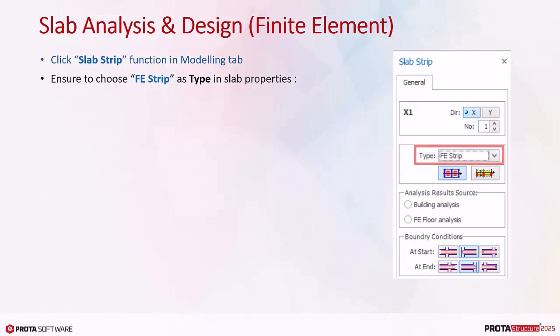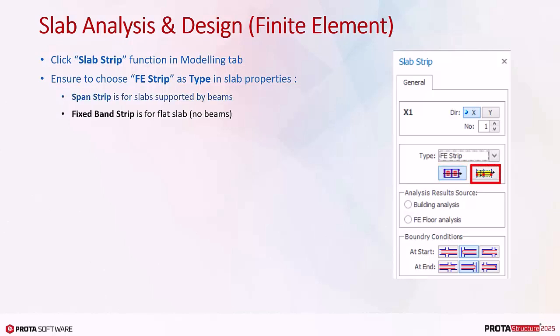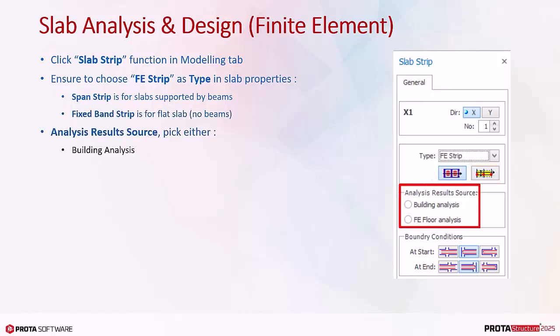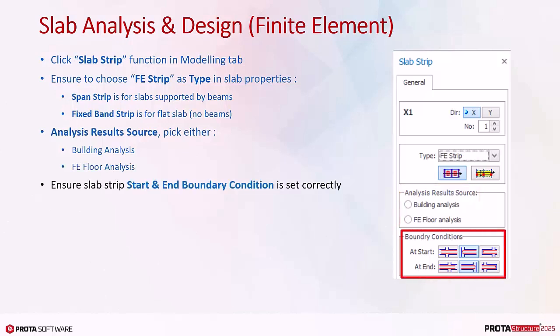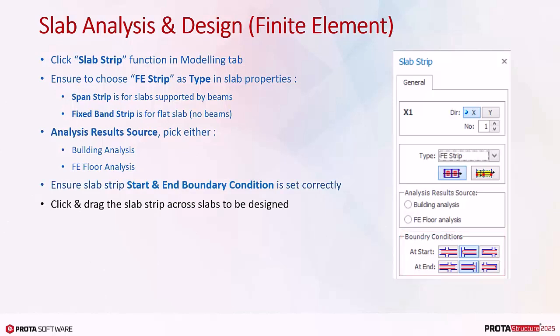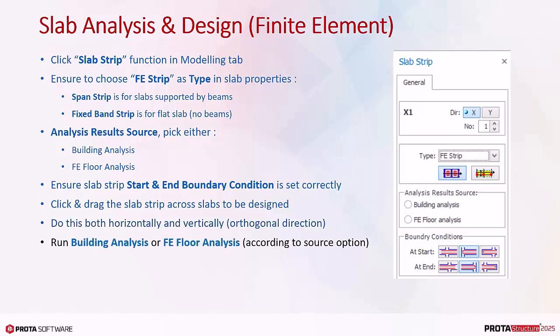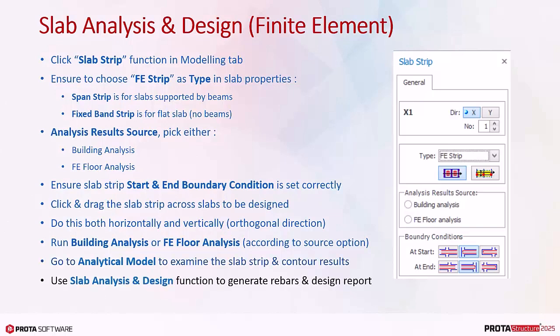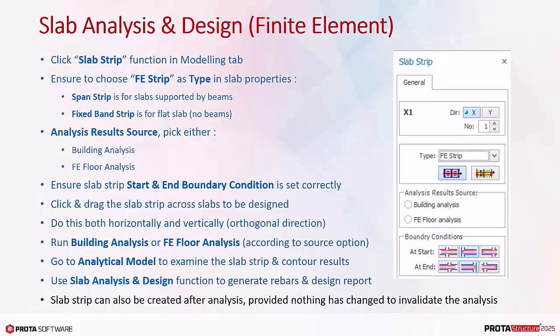Click the slab strip function in the modeling tab. Ensure to choose FE strip as the type in slab properties. Span strip is for slab supported by beams. Fixed band strip is for flat slab with no beams. For analysis result source, pick either building analysis or FE floor analysis. Ensure slab strip start and end boundary condition is set correctly. Click and drag the slab strip across slabs to be designed — do this both horizontally and vertically, that is in orthogonal directions. Run building analysis or FE floor analysis according to the chosen source option. Go to analytical model to examine the slab strip and contour results, for example moment contour. Use slab analysis and design function to generate rebars and design report.